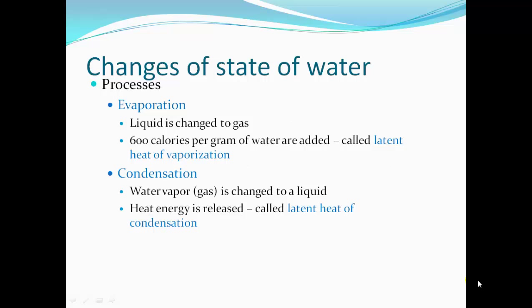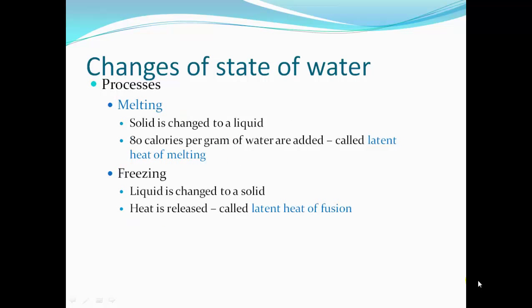The processes to go from one state to another are: evaporation, where liquid is changed to a gas — it takes 600 calories per gram of water added, called the latent heat of vaporization. Condensation, where water vapor or gas is changed to a liquid — heat energy is released, 600 calories per gram of water, called the latent heat of condensation.